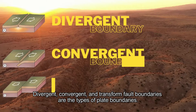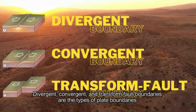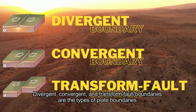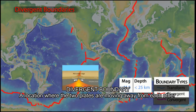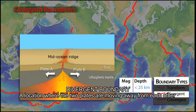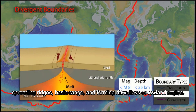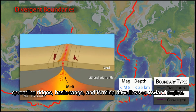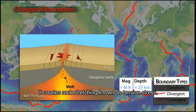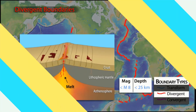Divergent, convergent, and transform-fault boundaries are the types of plate boundaries. Divergent boundary: a location where two plates are moving away from each other, forming spreading ridges, basin range, and rift valleys or lowland regions. It creates rock stretching known as tension stress.